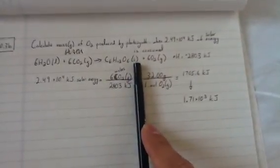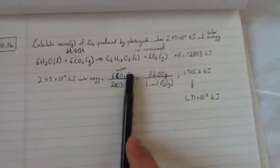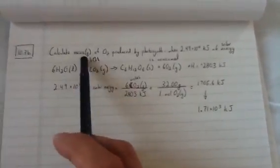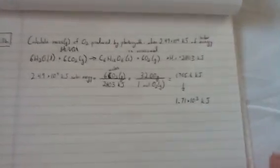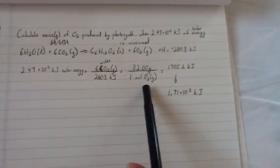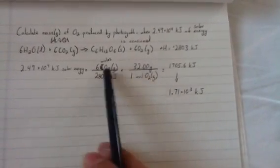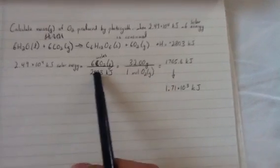We would have the total number of moles of O2. But they're not asking for that. They're asking for the mass in grams of O2. So, you know that in one mole of O2 gas, you should have 32 grams of O2 gas.